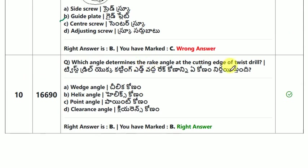Which angle determines the rake angle at the cutting edge of a twist drill? The answer is helix angle.